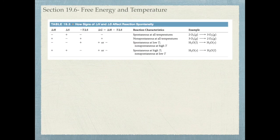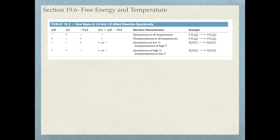How do we know when we'll have a spontaneous reaction? Looking at this table with the Gibbs equation ΔG = ΔH - TΔS: if enthalpy is negative and entropy is positive, both terms are negative, making ΔG negative — the reaction is spontaneous. However, if ΔH is positive and ΔS is negative, then ΔG is going to be positive no matter what the temperature — making the reaction non-spontaneous.